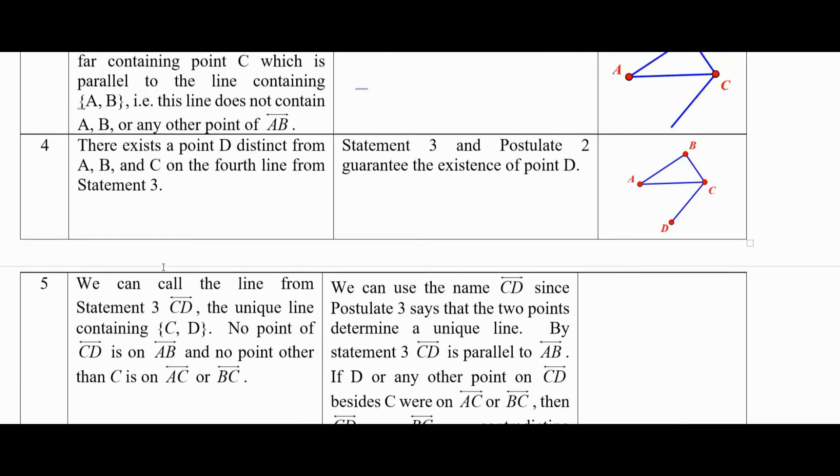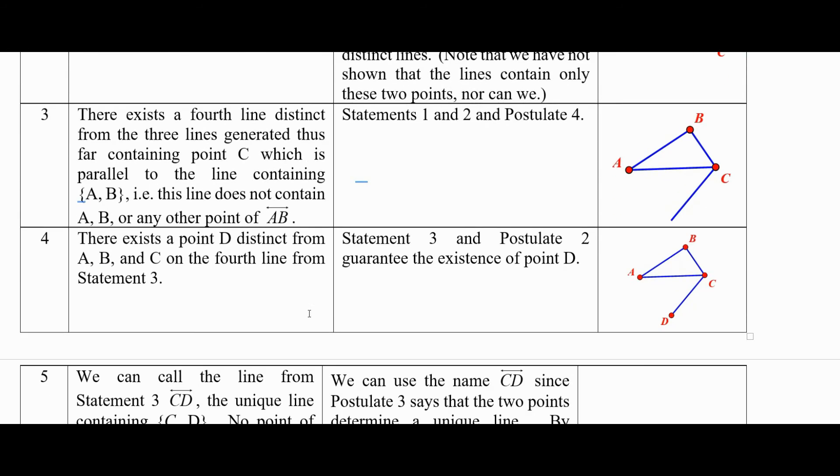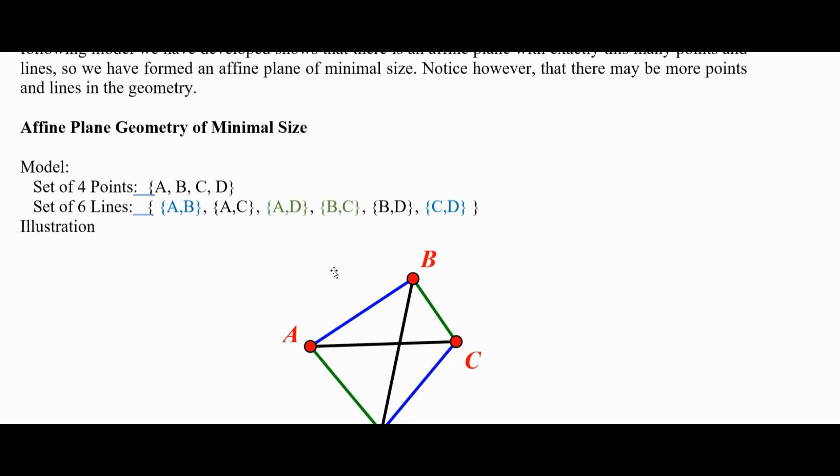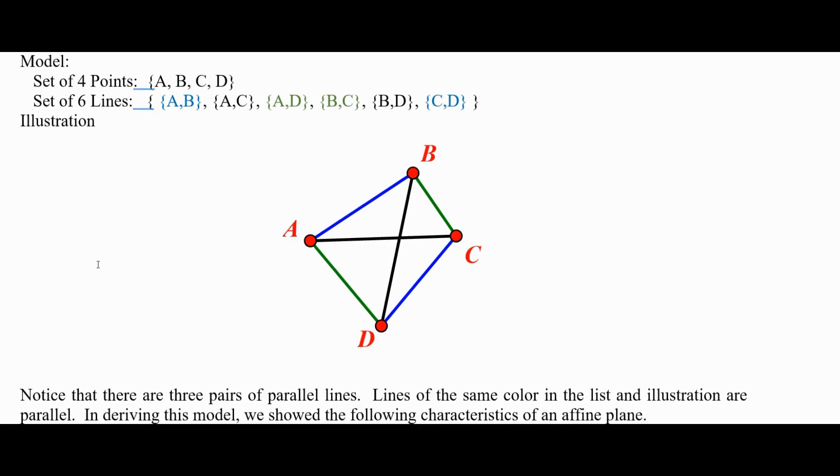The main thing to get out of this is how we can take a set of postulates, and the interplay among them, even if there's only just four of them, yields some interesting, at least mildly interesting, results and allows us to build a model in this way. Next time we'll talk about another type of finite geometry called a projective plane.